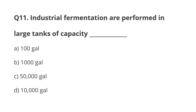Question number 11. Industrial fermentations are performed in large tanks of capacity: A. 100 gallons. B. 1,000 gallons. C. 15,000 gallons. D. 10,000 gallons.